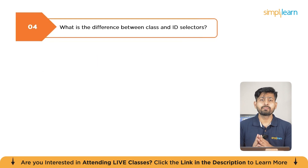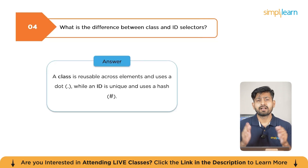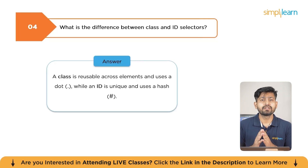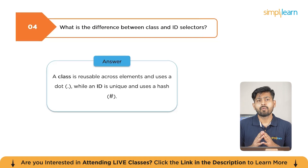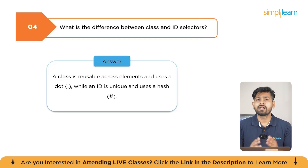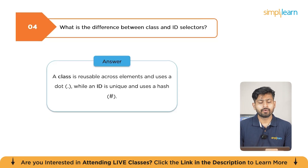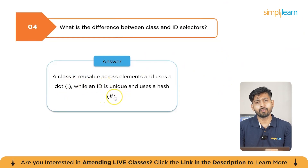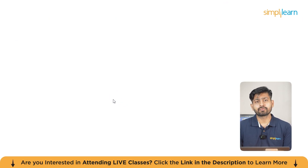What is the difference between class and ID selectors in CSS? A class selector is reusable and can style multiple elements, while an ID selector is unique and should be used only once per page for a specific element. For a class selector, we use a dot (.), and for an ID, we use a hash (#).